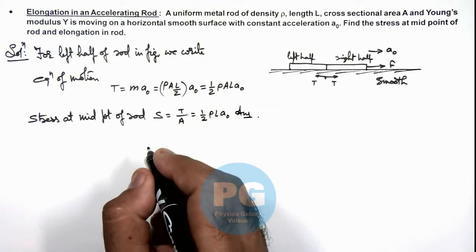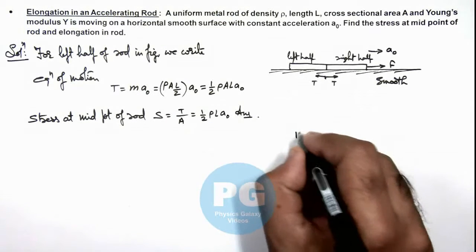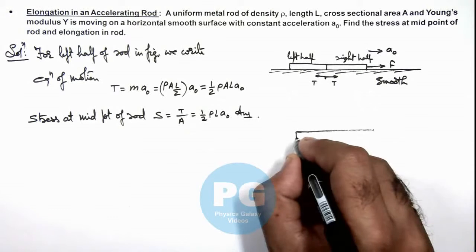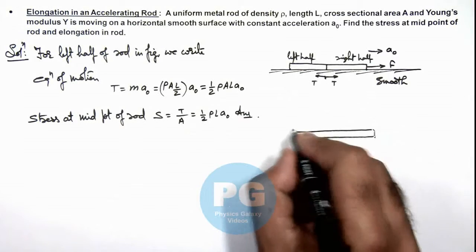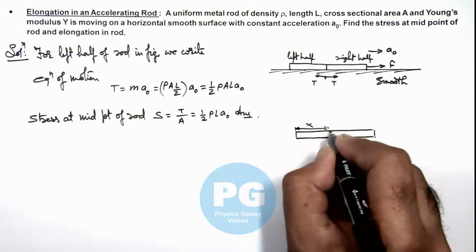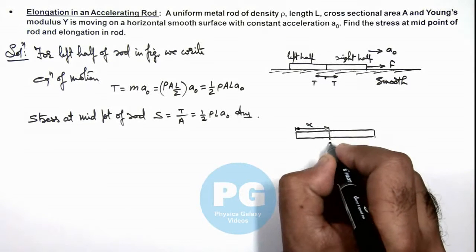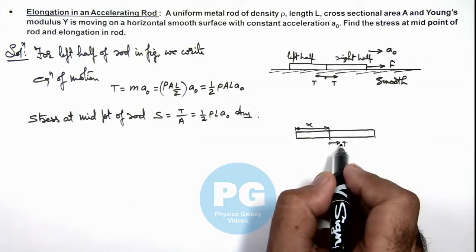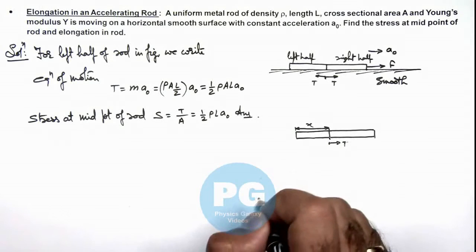We are also required to find the total elongation in the rod. We can reconsider rod now to find the elongation in rod. We consider a point at a distance x from the left end, and we consider at this point the tension acting is T on the left part of the rod. This T is responsible for acceleration in the length x of this rod.